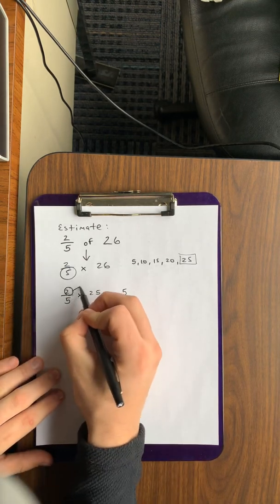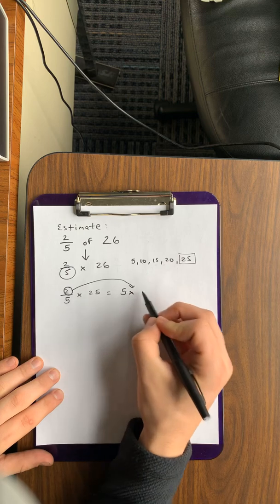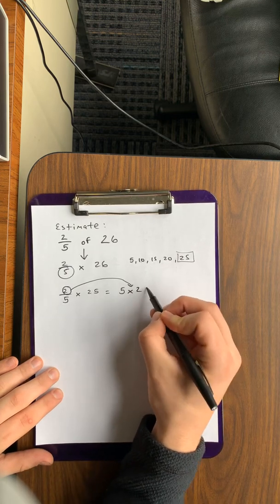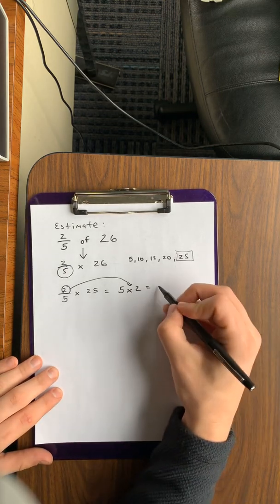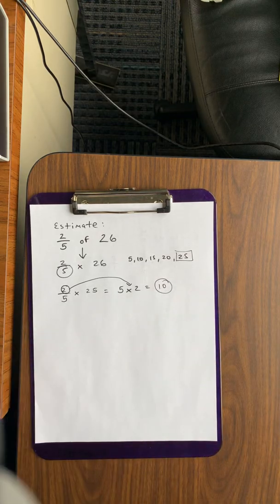And they've also been taught to take that numerator and multiply it by how many times you have skip counted. So in this case, five times two, and you should get 10 for an answer.